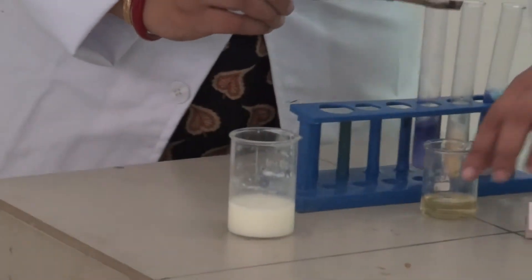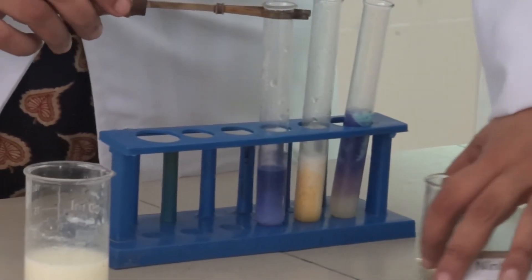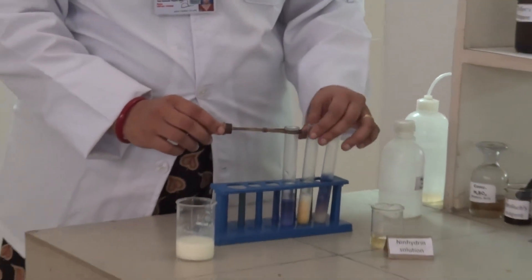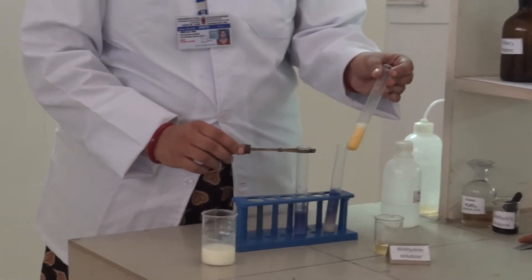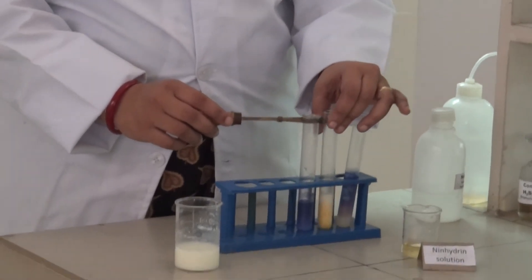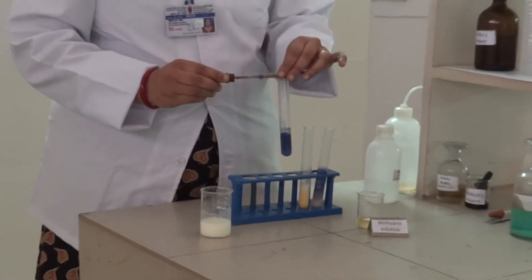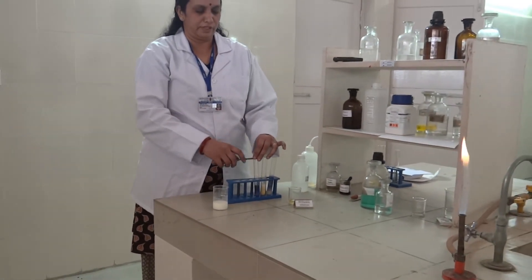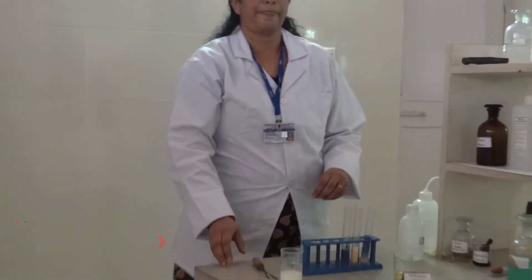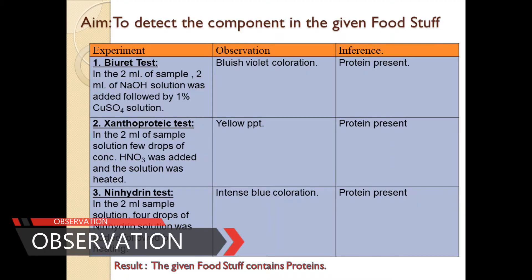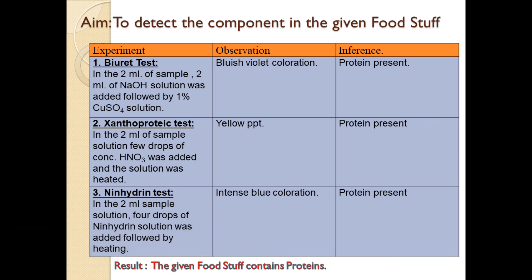We have got all three tests here. The first test, the Biuret test — it's quite violet. The second test is the Xanthoproteic test — turning yellow in colour with concentrated nitric acid. And the third test with ninhydrin — it's turned blue in colour. So these three tests confirm the presence of protein in the foodstuff. Now record these three experiments, their observations and inference in your practical record. Don't forget to write the aim, the experiment, observation, inference and the result.